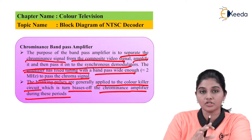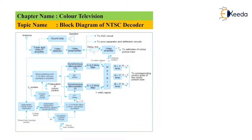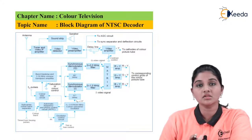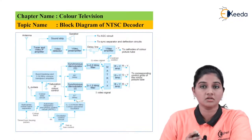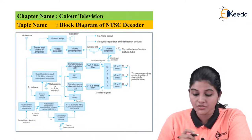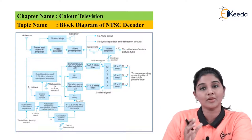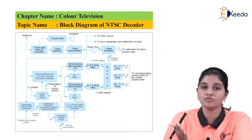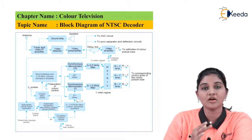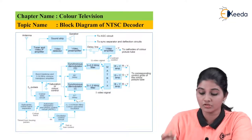In the block diagram of the NTSC decoder, the output of the video preamplifier is given to the subcarrier color burst separation circuit, which produces the chroma signal and the burst signal. These two signals are not present at the same time — the chroma signal is present during trace time and the burst signal during blanking time, both operating at 3.58 megahertz. The bandpass amplifier, having a frequency of 2 megahertz, filters out constant frequency components, amplifies the signal, and passes it to the demodulator.